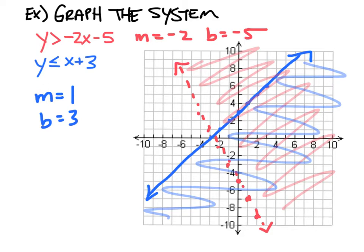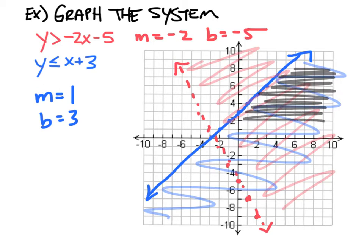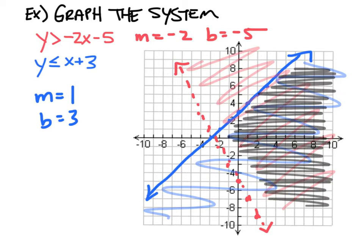Where do these shadings intersect? That's my solution to this system. This entire region right here is the solution to this system of linear inequalities. You could check your answer by simply choosing a point — like 0, 0 is inside of here — and plugging 0, 0 into each of the inequalities and seeing if it satisfies those inequalities.